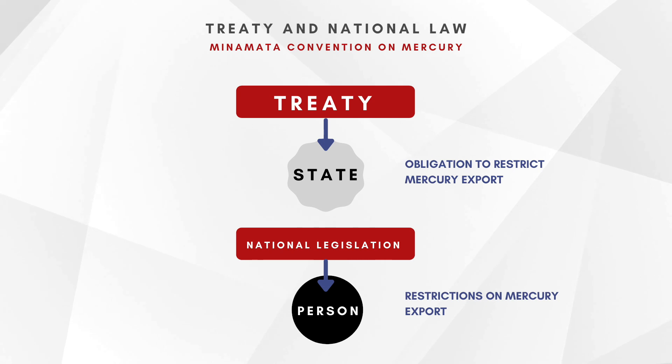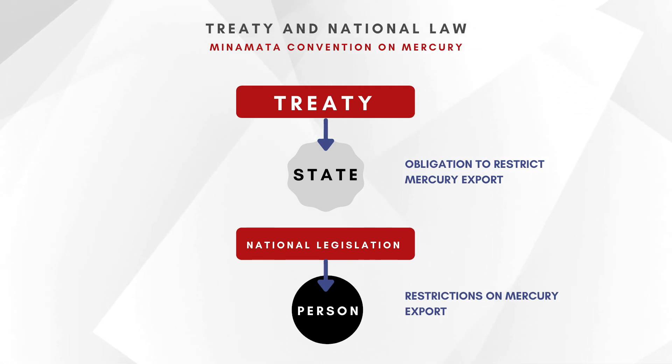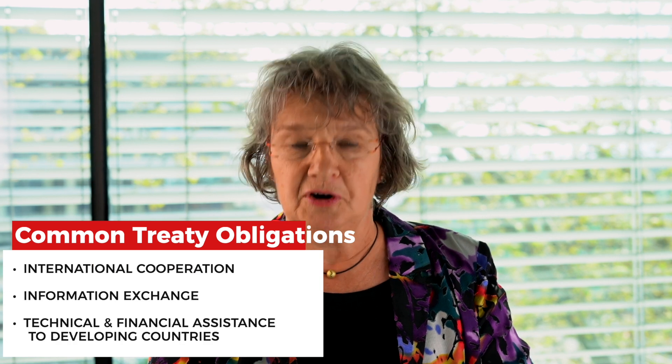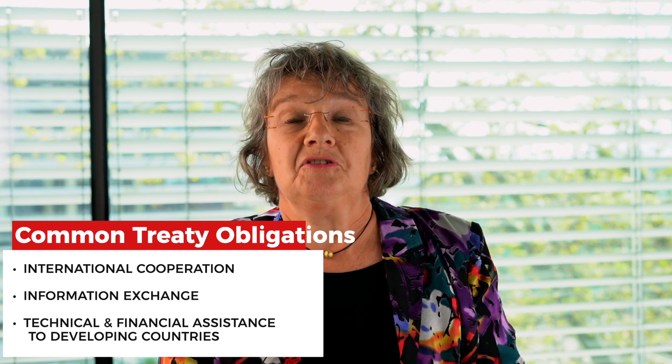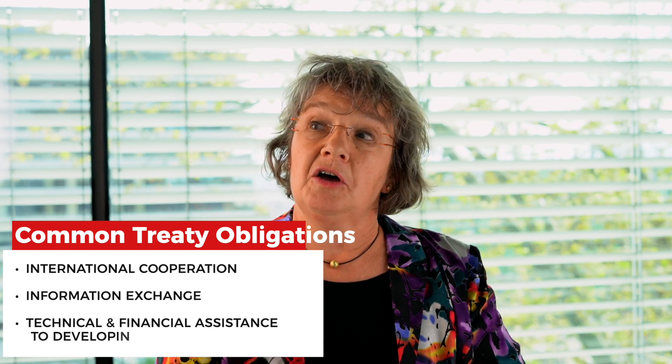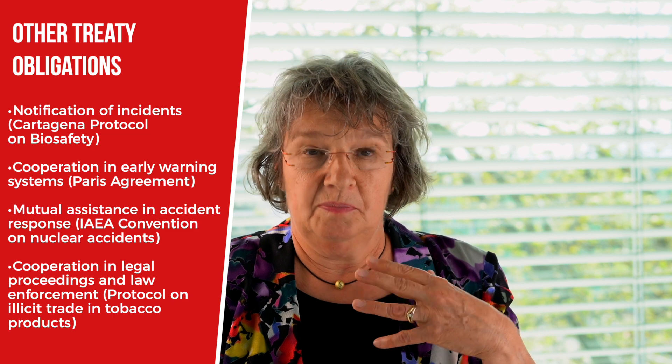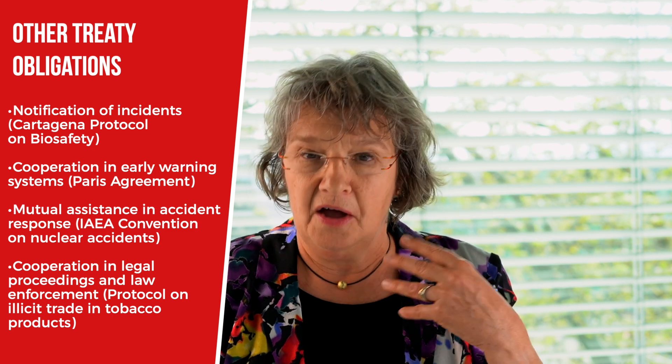The content of a treaty differs in accordance with its objective, setting out measures that states have to take. In addition, most modern treaties also have obligations designed to facilitate implementation and enhance effectiveness. A very common way of doing this is to include obligations for international cooperation, information exchange, and technical and financial assistance to developing countries — not directly addressing the substance, but as a means of making the treaty more effective. Some treaties go into more detail, such as an obligation to notify incidents — the Cartagena Protocol on Biosafety does this — or an obligation to cooperate on early warning systems and emergency preparedness, as in the Paris Agreement on climate change.